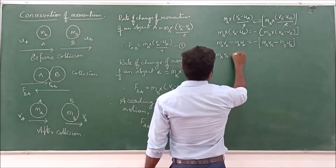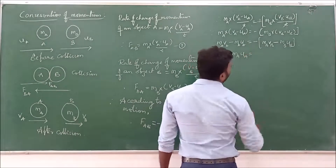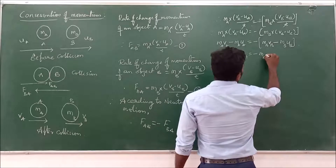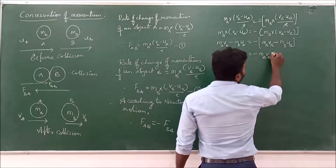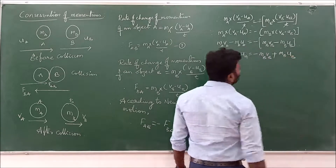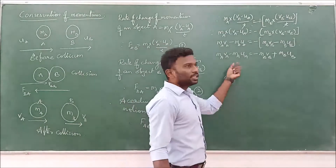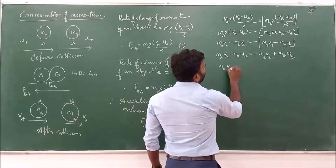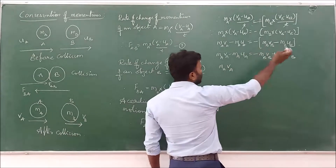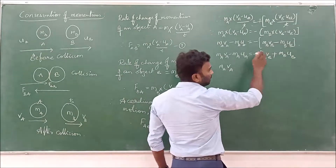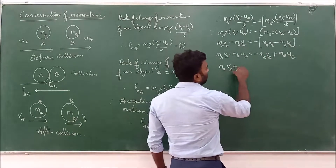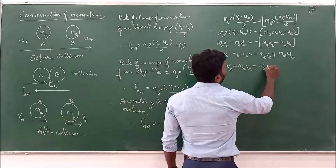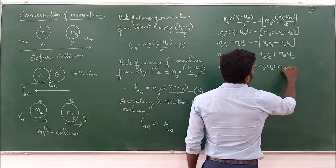Now, taking the V terms and U terms separately: moving the minus MB times VB to the left side it becomes plus, and moving the minus MA times UA to the right side it becomes plus. So: MA times VA plus MB times VB equals MA times UA plus MB times UB.